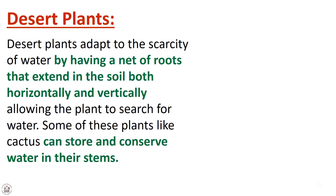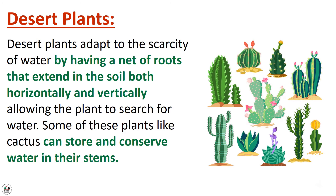Desert plants adapt to the scarcity of water by having a net of roots that extend in the soil both horizontally and vertically, allowing the plant to search for water. Some of these plants, like cactus, can store and conserve water in their stems.